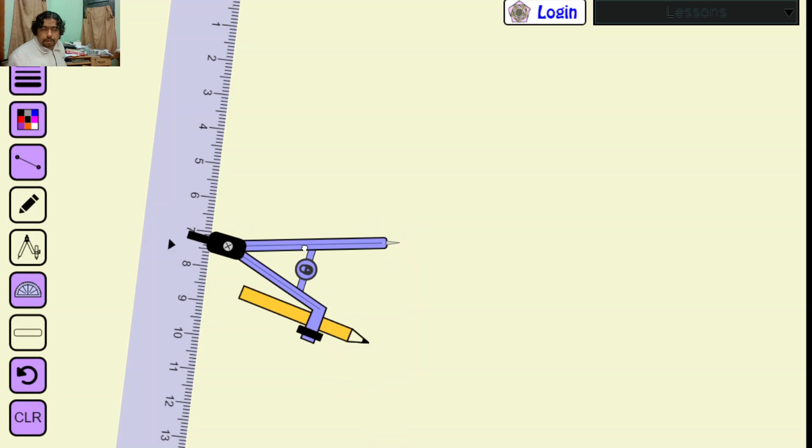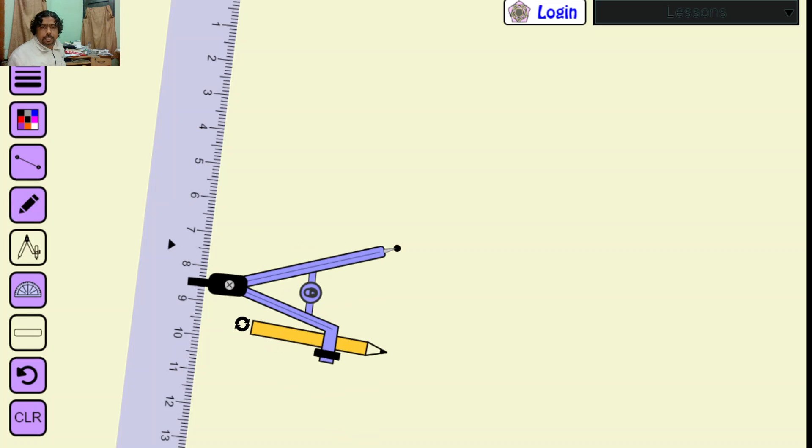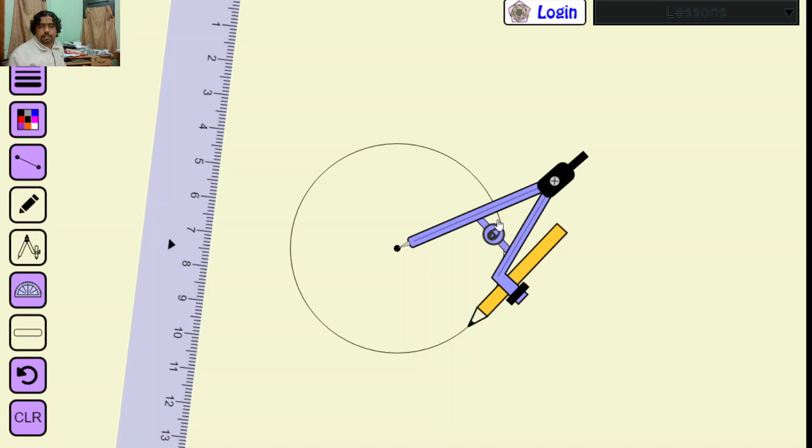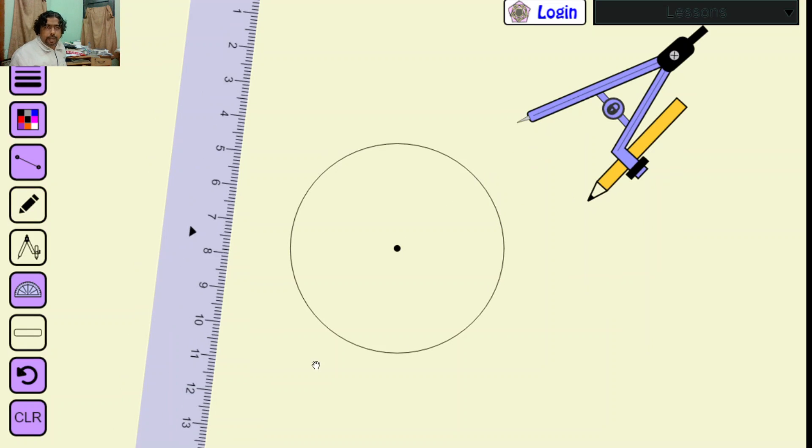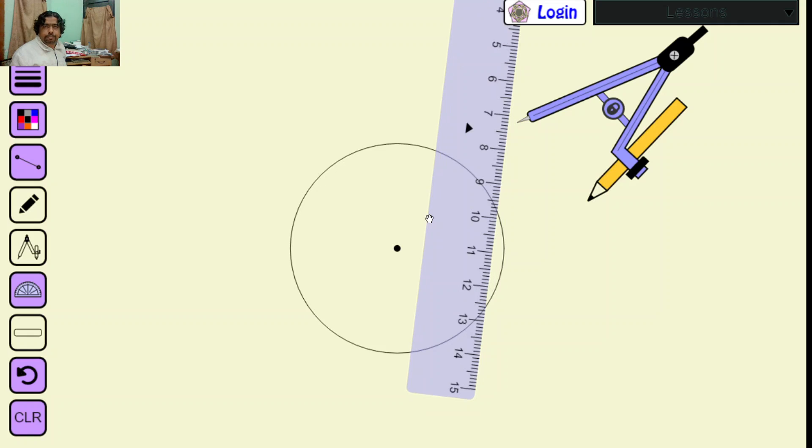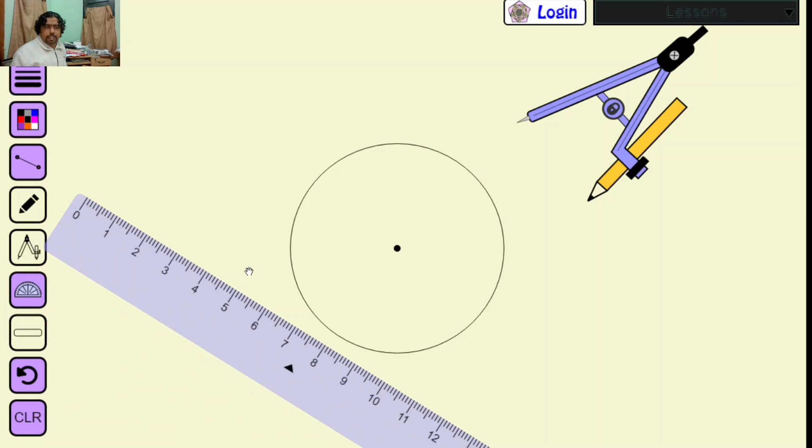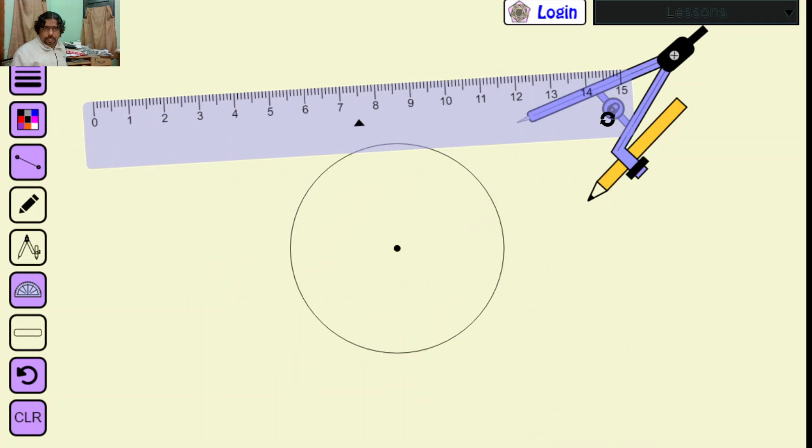First I have to draw a circle with any radius. This is the circle I have drawn. To get the diameter, use the scale in any direction, but it is better if I make a horizontal diameter so it will be easier to understand.